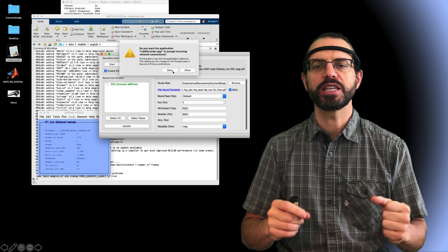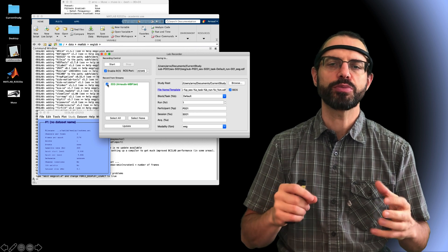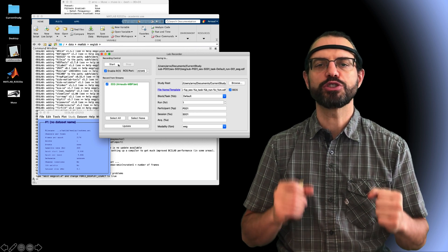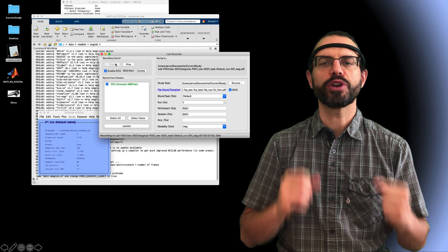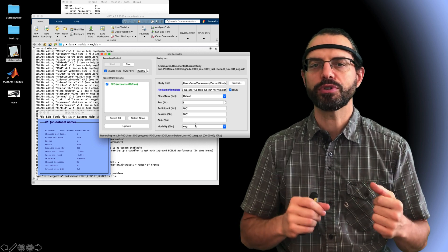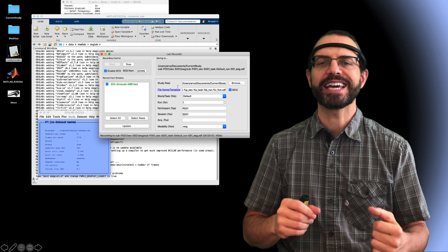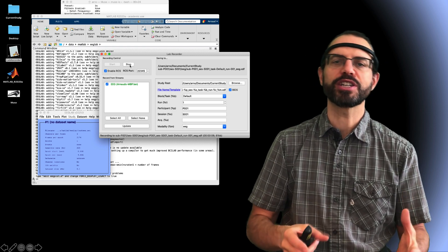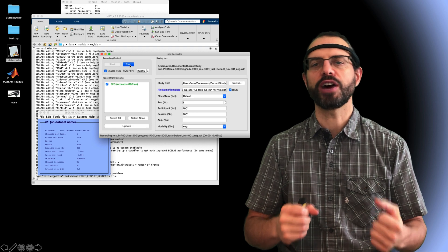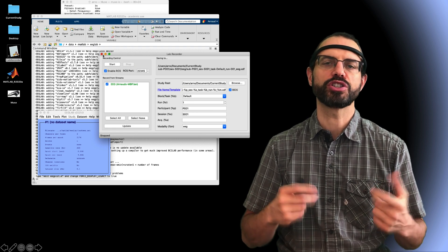So, we have not stopped the streaming EEG data. I start the Lab Recorder program, select the EEG stream, then start recording. This is not a MATLAB program. It's a Python program. When I use the Lab Recorder program, I cannot see the EEG. If I wanted to visualize the EEG, I can use other tools such as the MATLAB viewer I just showed you.